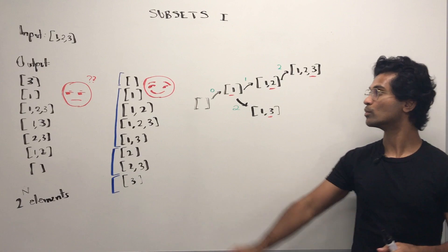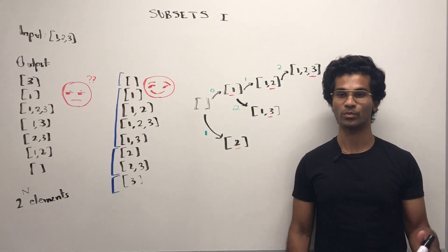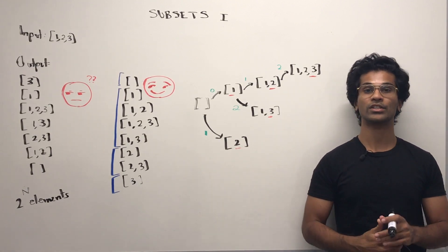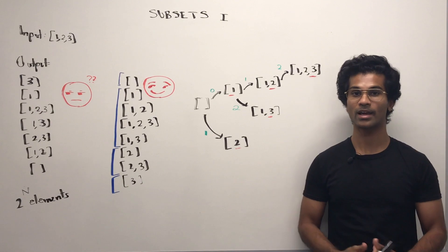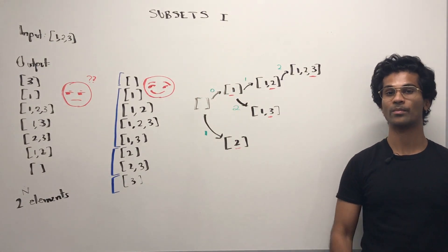So then we move to the second number. Started a brand new branch with two. Can we add any more numbers to this subset such that it's unique or different? Yes, we can add three to this subset. So that becomes two comma three.